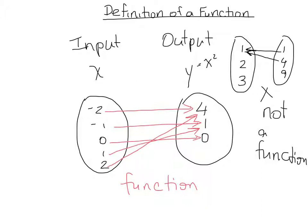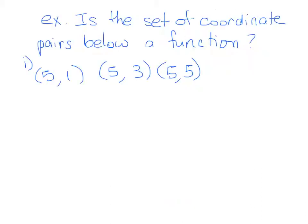Let's look at some coordinate pairs and see if we can figure out whether or not they're functions. In this example, we have the pairs (5, 1), (5, 3), and (5, 5). We have 5 as our x value more than once, and it's going to more than one different y value. That's not allowed for a function, so this is not a function. Remember, x can have only one y.